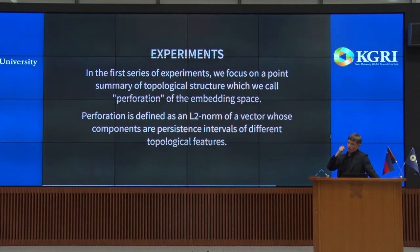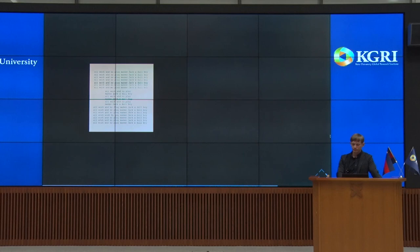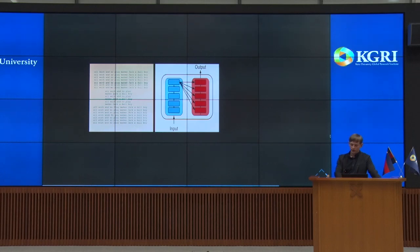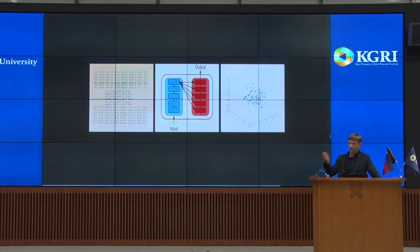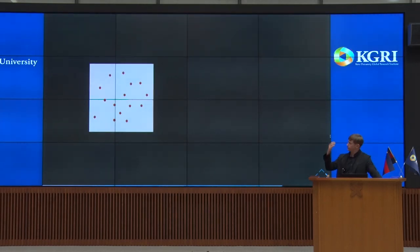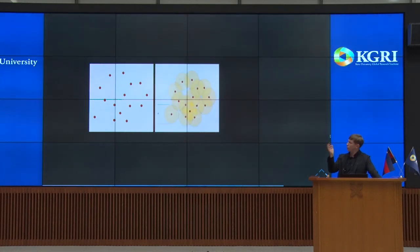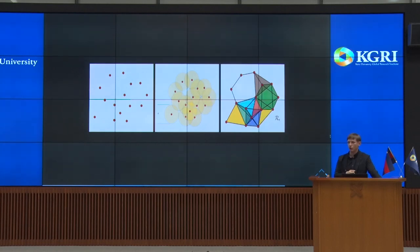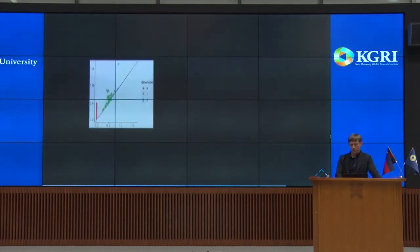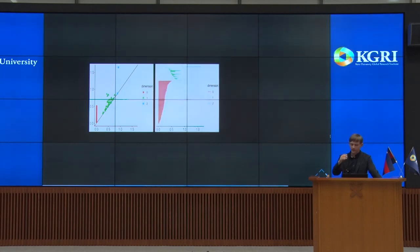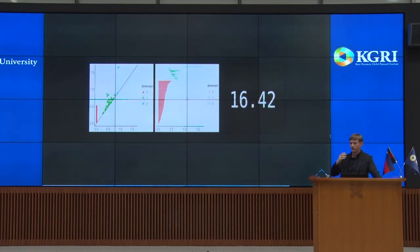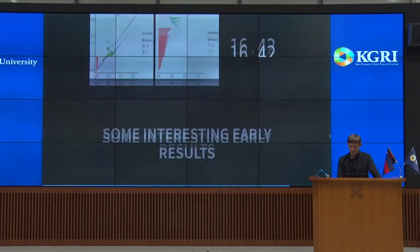We defined something called perforation, which is a kind of L2 norm of a persistence interval. The pipeline works as follows: I feed a corpus of natural language text through the neural language model to get a point cloud in some high-dimensional vector space. I then expand a neighborhood around each point to obtain a complex, apply homology theory to obtain persistence intervals for different topological features, and summarize as the magnitude of the persistence diagram — yielding a single number.